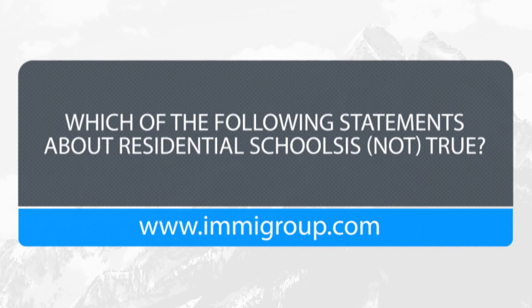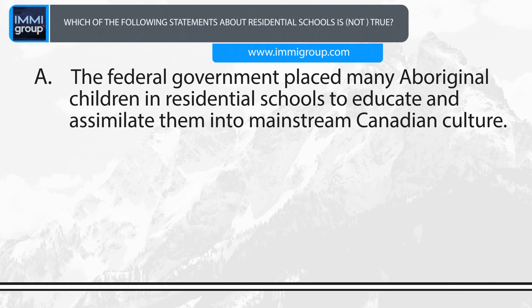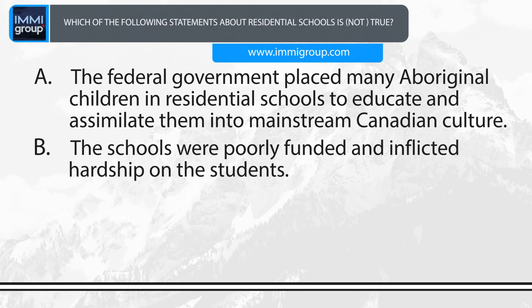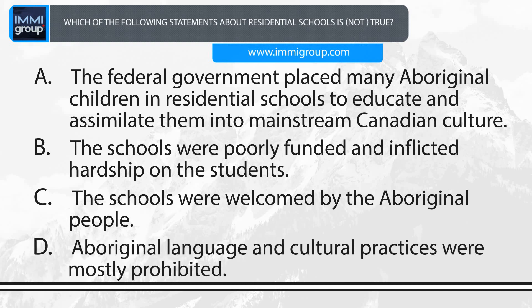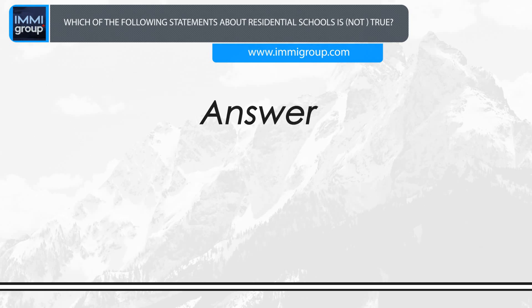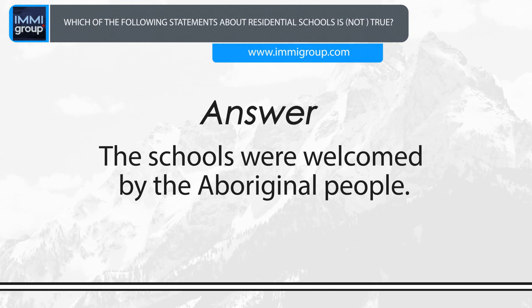Which of the following statements about residential schools is not true? A. The federal government placed many Aboriginal children in residential schools to educate and assimilate them into mainstream Canadian culture. B. The schools were poorly funded and inflicted hardship on the students. C. The schools were welcomed by the Aboriginal people. D. Aboriginal language and cultural practices were mostly prohibited. Answer: The schools were welcomed by the Aboriginal people.